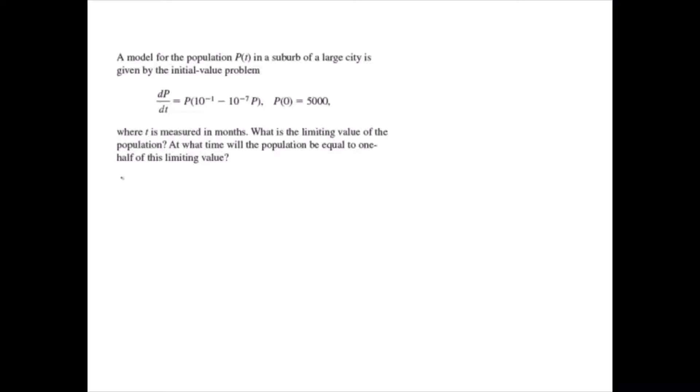If we solve this initial value problem, we get p equals 500 over (0.0005 plus 0.0995e to the negative 0.1t).